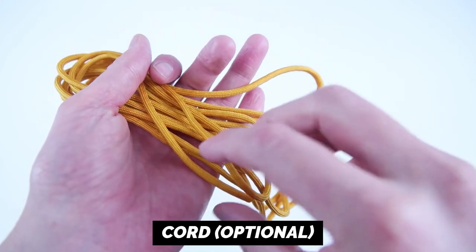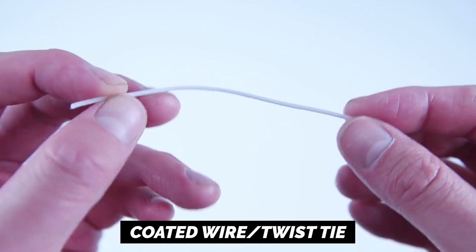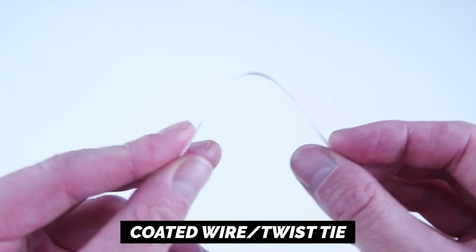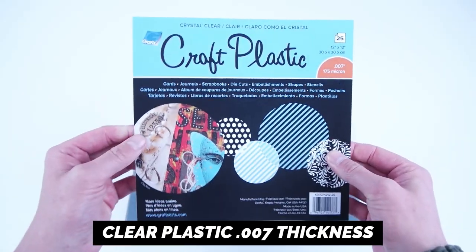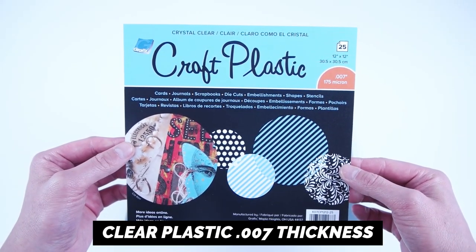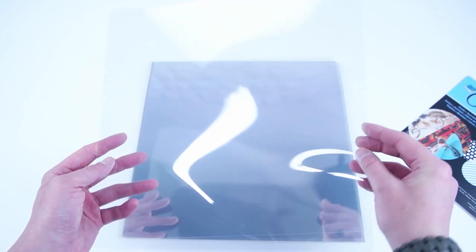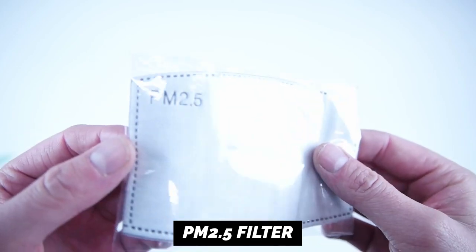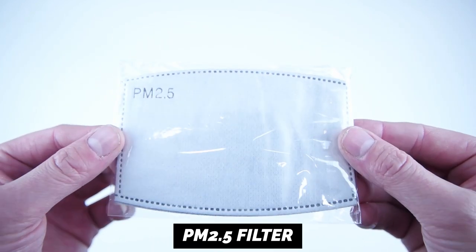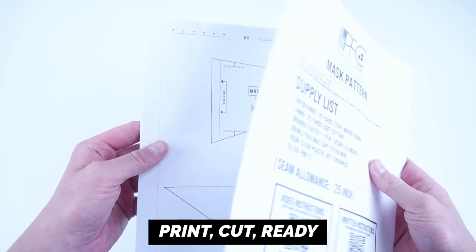Parachute cord or shoelace if you choose to do the second option of tie back. One twist tie or coated wire. Clear plastic, and this can be picked up in packs of 25. A PM 2.5 filter, and this is going to go in the mask at the end. And lastly your pattern, and this pattern is available at properfitclothing.com.